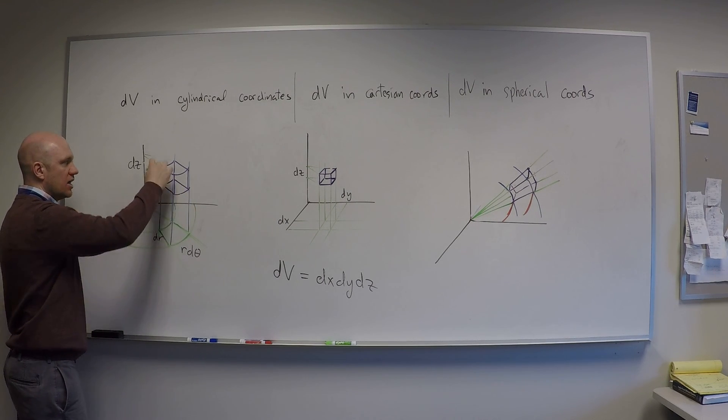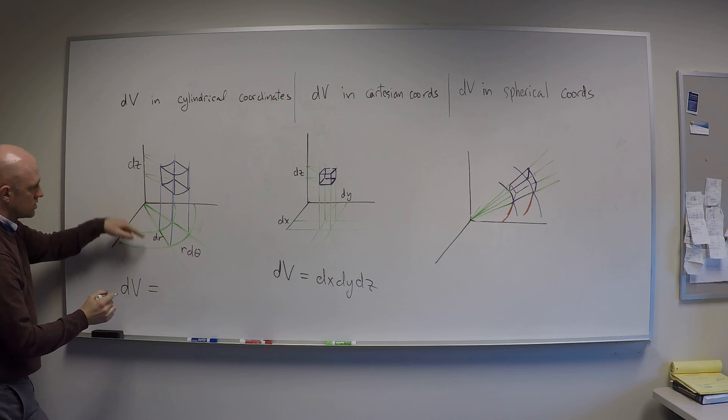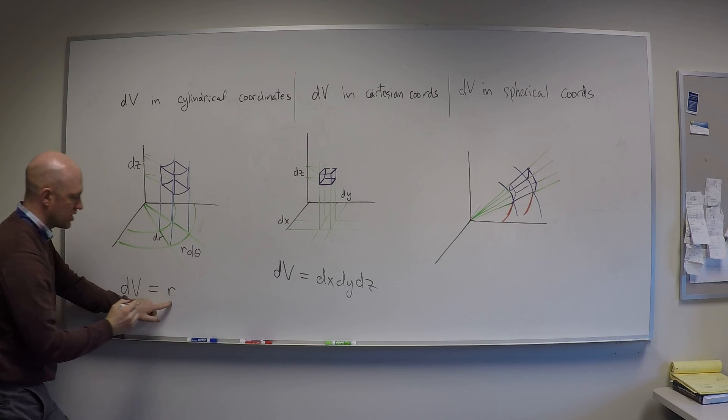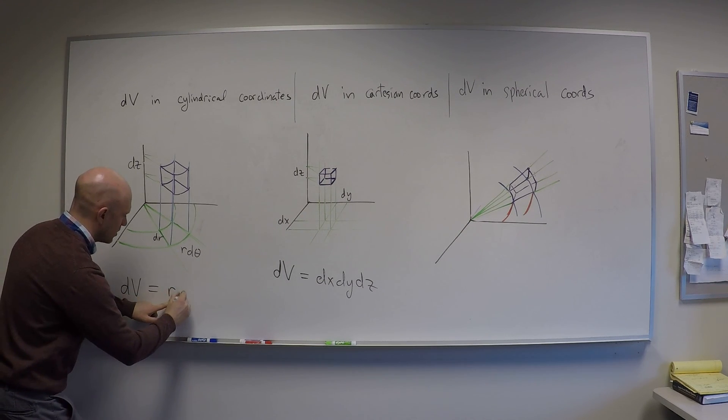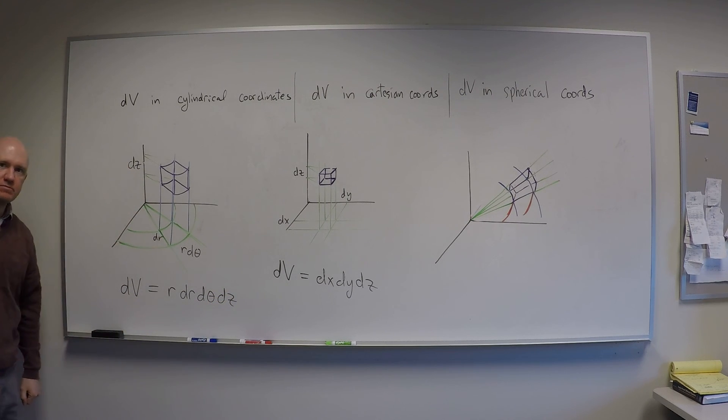r d theta, this length, dr, and the height, dz. And so the full volume element is going to be dv equals the product of these three things. And I'll write the r out in front. So r, dr, d theta, dz. Excellent.